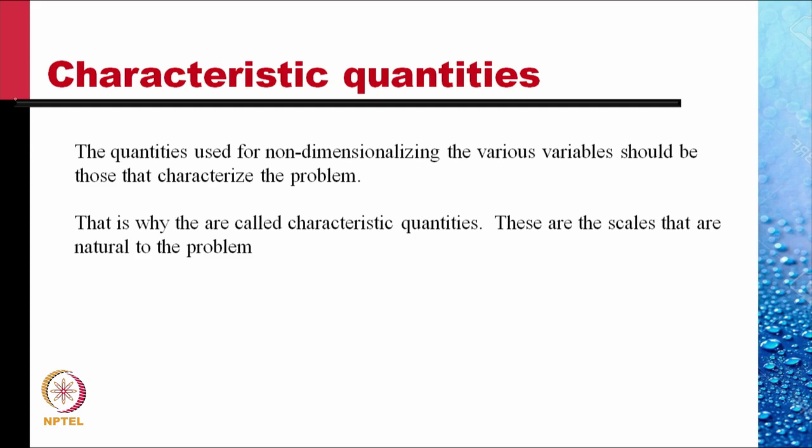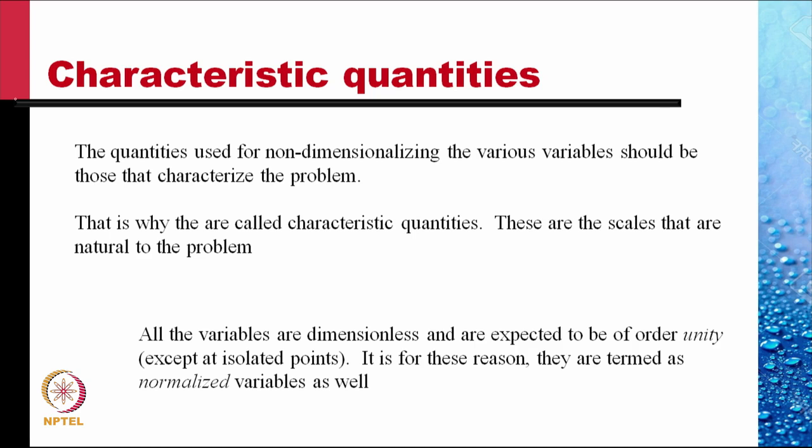The quantities used for non-dimensionalizing the various variables should be those that characterize the problem — that is why they are called characteristic quantities. These are the scales that are natural to the problem; they do not depend upon artificial definitions like meter or foot. The diameter of the cylinder is a natural dimension for use in this problem. All the variables are dimensionless and are expected to be of order unity except at isolated points, and for this reason they are termed normalized variables as well.